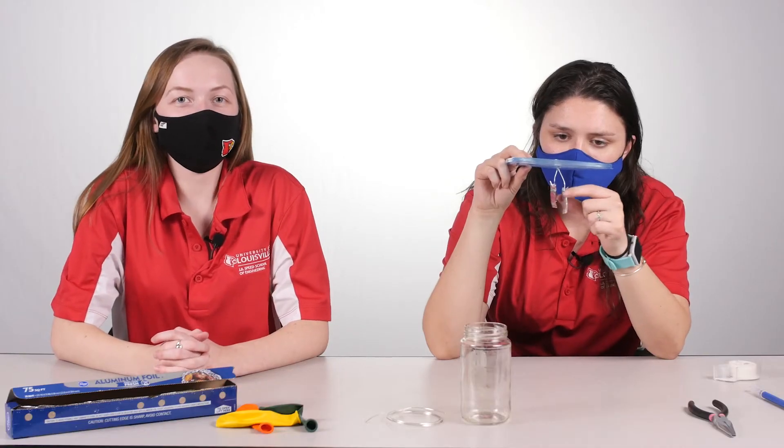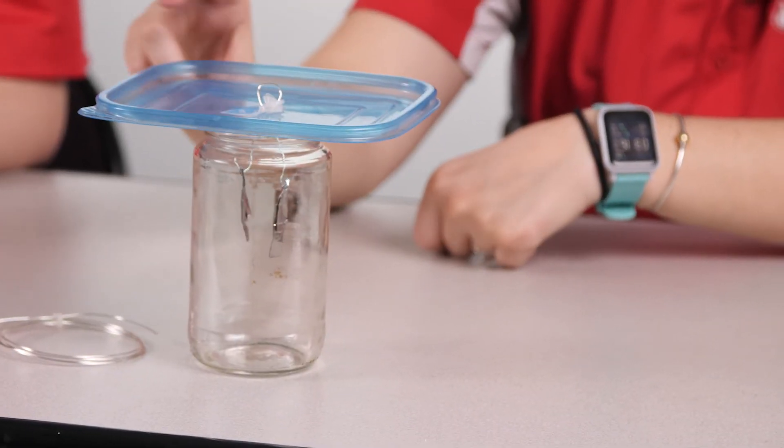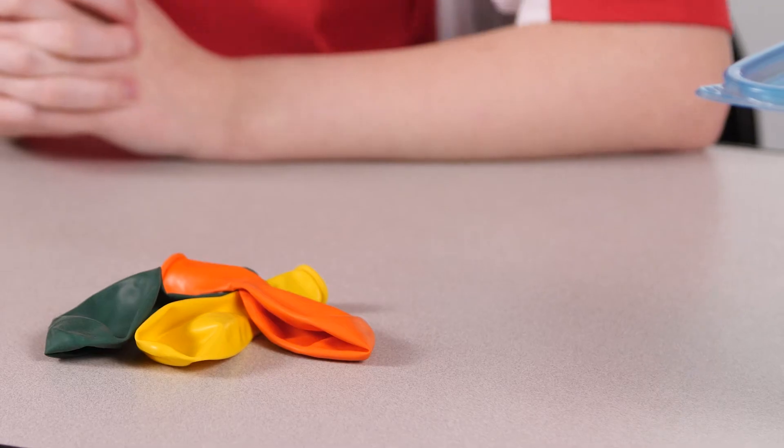Next, Emery's going to put the lid with the hooks and aluminum foil into the glass jar by just setting the lid on top. Next, you'll blow up a balloon. We have one ready.